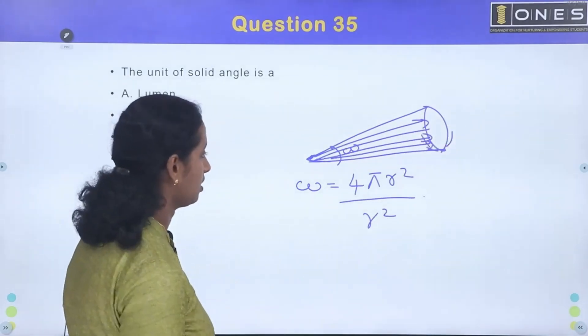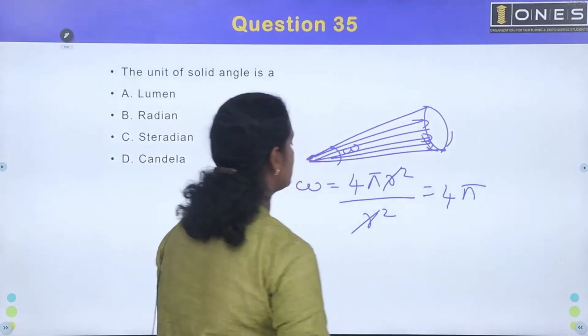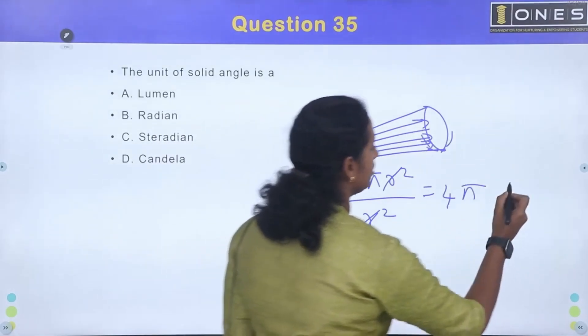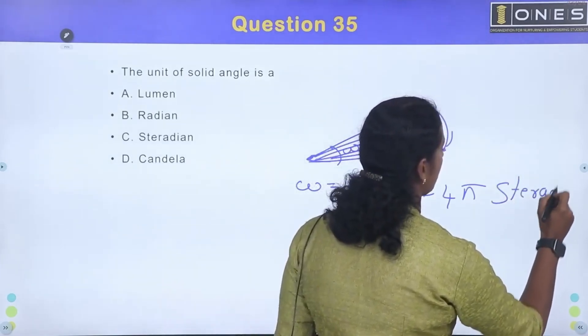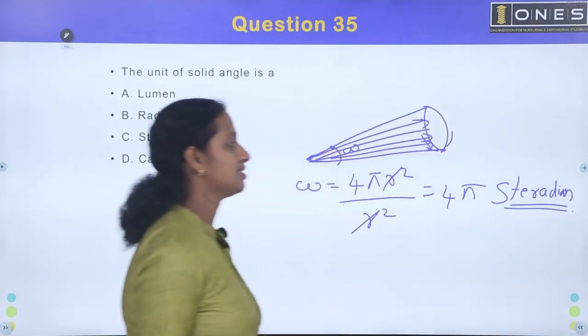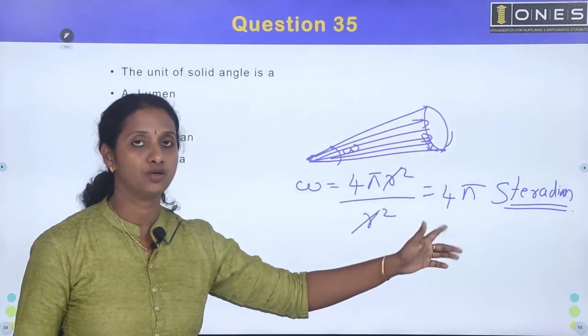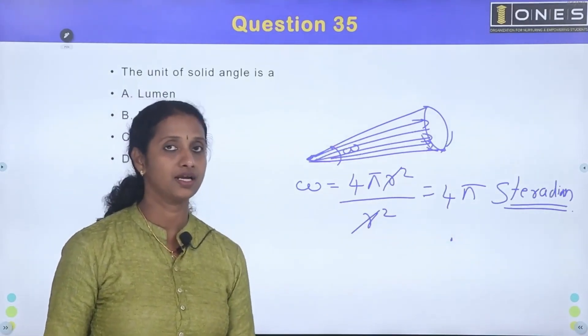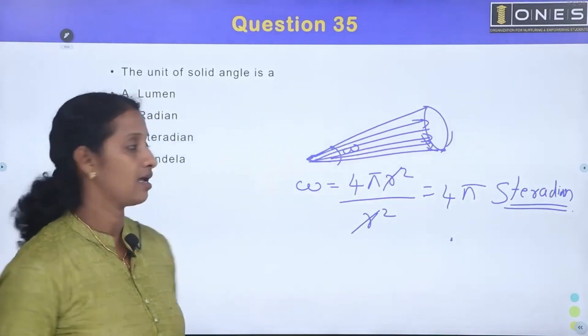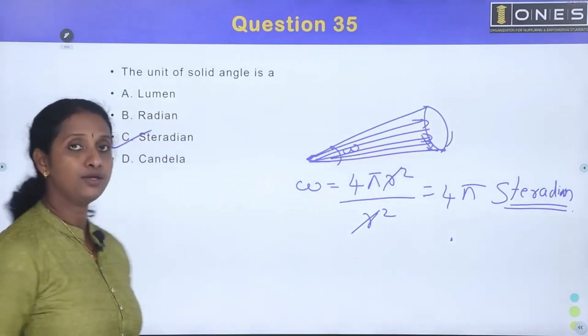That is r square. In the case of a sphere, solid angle is 4 pi. This unit is steradian. It's clear? And the sphere. Let's add a constant value, that is 4 pi. Option C is the correct answer - that is steradian.